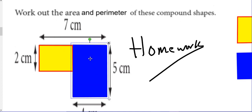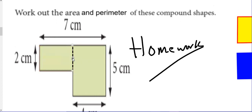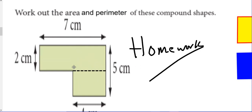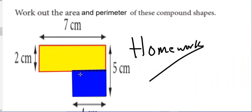I'm going to divide the shape horizontally instead. Either way you divide — horizontally or vertically — you're going to end up getting the same area of the compound shape. I'm going to label the yellow shape as A and the blue shape as B.